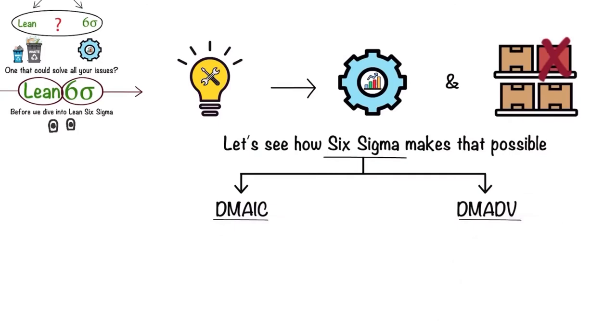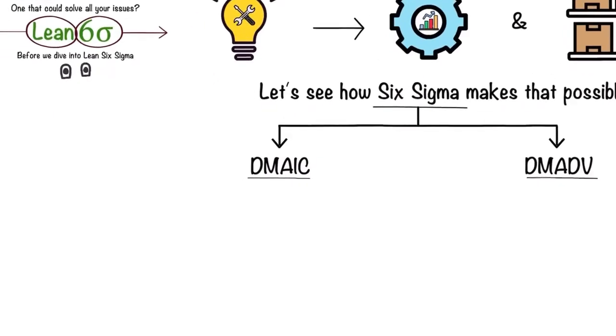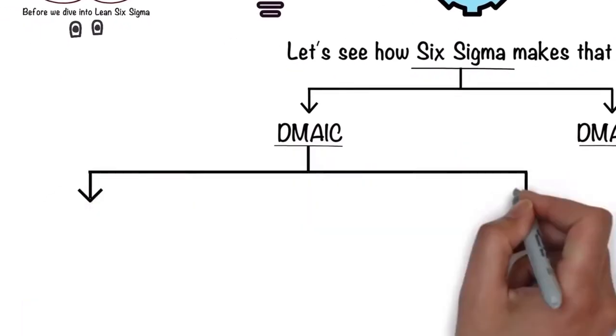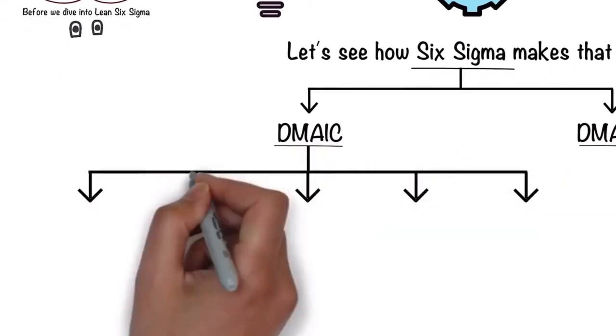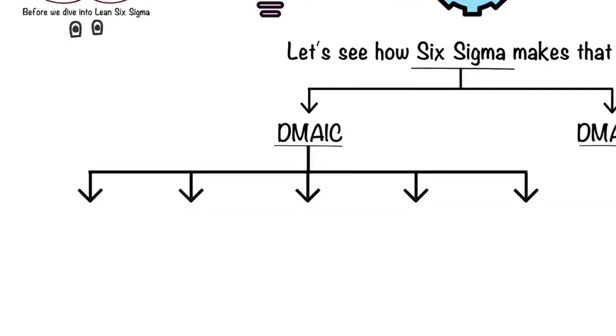You can learn more about these two methodologies by checking out our Six Sigma in 9 minutes video by clicking on the top right corner. Let's have a closer look at DMAIC, since Lean Six Sigma uses the DMAIC methodology of Six Sigma.